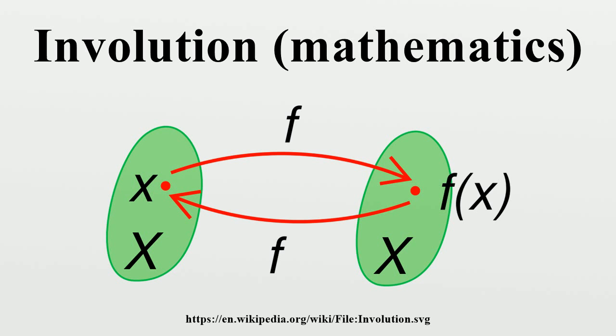Group theory: In group theory, an element of a group is an involution if it has order 2, i.e. an involution is an element A such that A is not equal to E and A squared equals E, where E is the identity element.